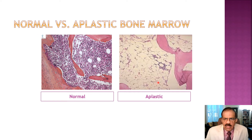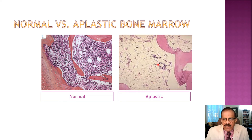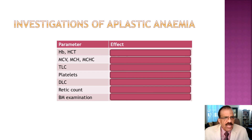In the trephine biopsy slide, the normal picture shows very cellular tissue - bone and marrow with many small dots representing lymphocytes, neutrophils, myeloblasts, and megakaryocytes - the whole bone marrow is populated with different cell types. Comparing with aplastic anemia, the marrow is replaced almost entirely by fat tissue with very few cells scattered here and there. This fatty replacement is the classical picture of chronic idiopathic aplastic anemia.